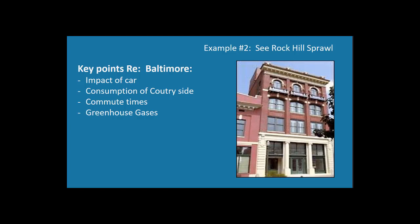Key things to notice about Baltimore: the impact of the car, lots of consumption of the countryside, rising commute times, and dramatically increasing greenhouse gases. Now looking at Rock Hill — notice this building in downtown Rock Hill. The kind of details you see on these structures is interesting: a Best Buy is meant to be encountered at 60 or 70 miles an hour — you see a flash of blue and yellow and say 'there's a Best Buy, let's get a television.' But as a pedestrian, you have time to notice details.